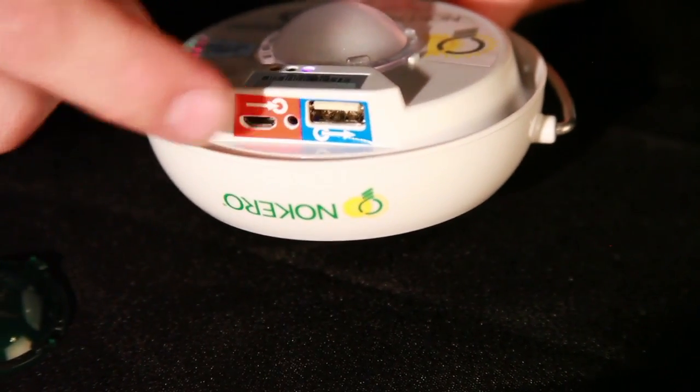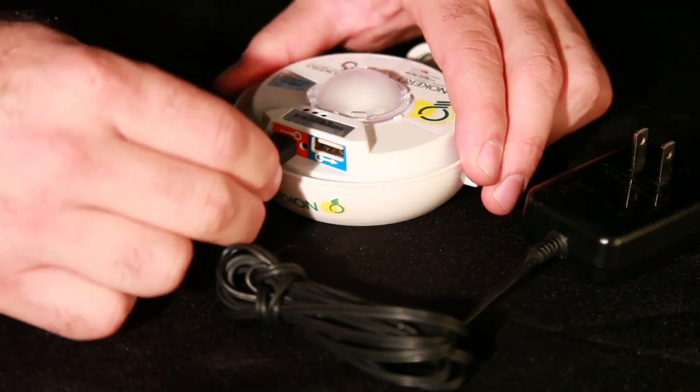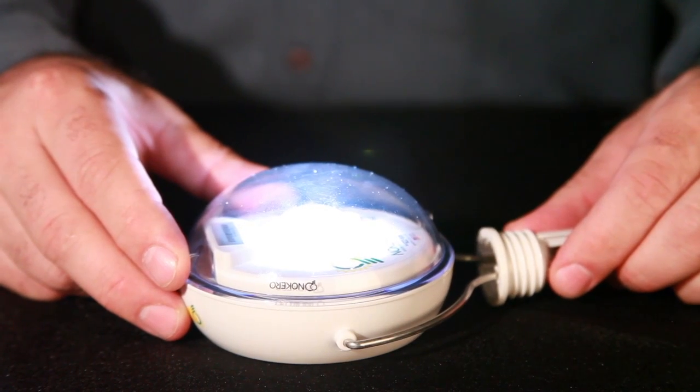If the sun isn't strong and grid power is available, these charging ports can be used to charge the battery. The power stored in the battery is used by the LED to provide up to 50 lumens of light.